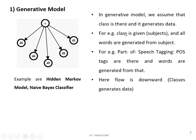In a generative model — examples include hidden Markov model and Naive Bayes classifier — we assume that a class exists and it generates the data. For example, if the subject is maths, the words derived from the maths class are integration, derivation, summation, and related formulas. Here, different part of speech tags are our classes: noun, determiner, adjective, adverb. These classes generate various types of words — that is why the flow is downwards, from classes generating data.